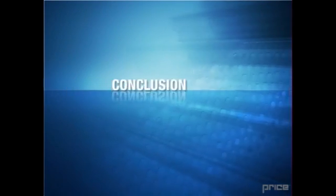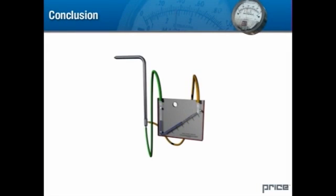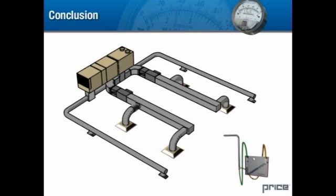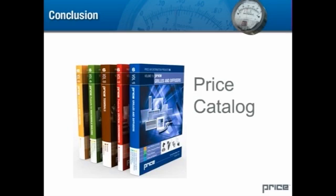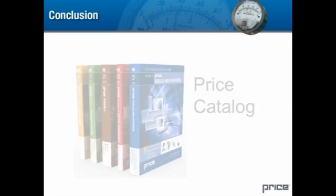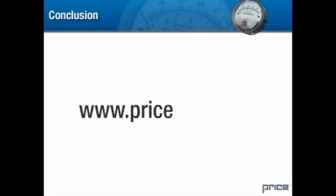In this unit, we have examined the nature of air pressure. Using instruments such as the inclined manometer and pitot tube, we can measure different types of pressure found in an HVAC system. Price engineers use these methods to design and evaluate HVAC components. Acquired pressure and air flow measurements are published in the Price Catalog so that you, the HVAC professional, can make informed decisions regarding component selection. We hope that you've enjoyed this overview of pressure measurement. For more information, contact your local Price representative or visit our website at www.price-hvac.com.